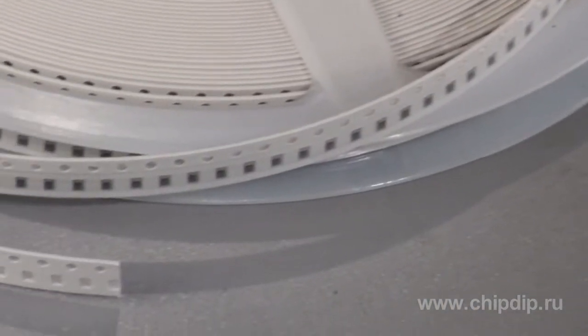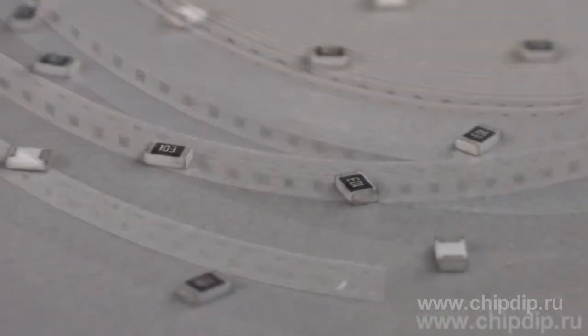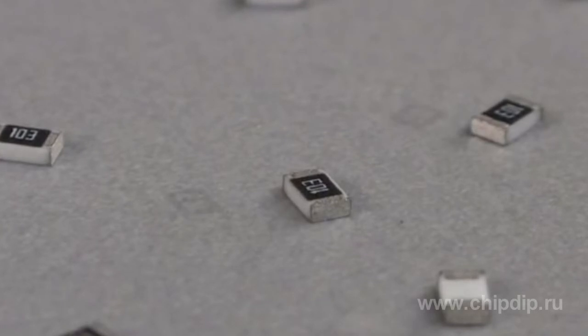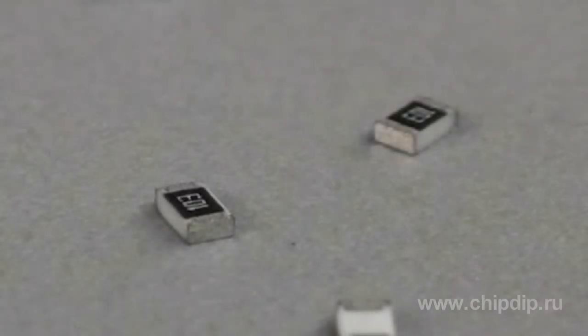One of the methods for adjusting such resistors is applying a pattern on such band with the help of a laser. This helps minimize the effective width and increase the effective length.